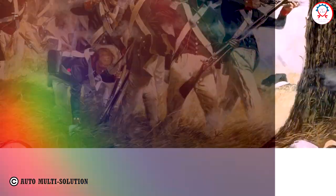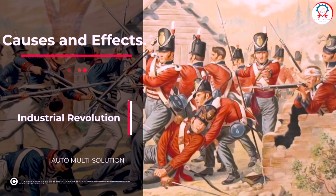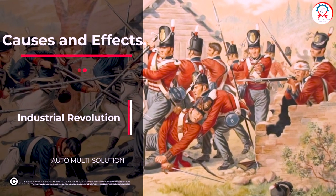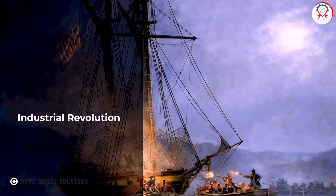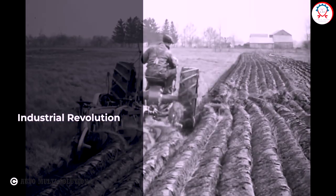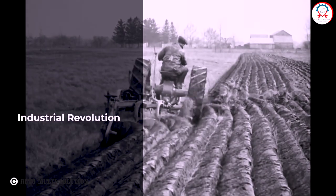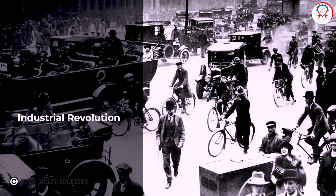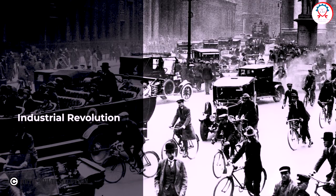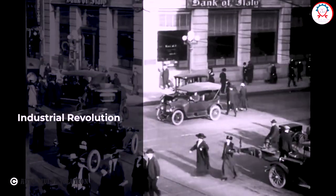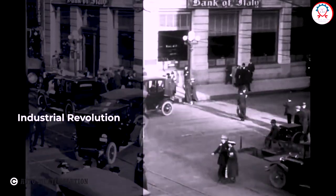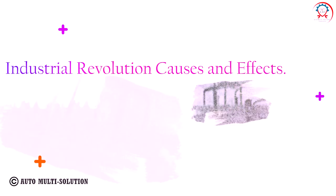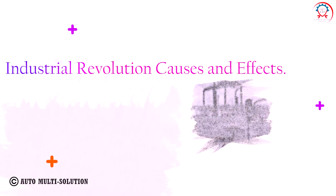What was the industrial revolution and its effects? Sweeping social changes occurred, including the growth of cities and the development of working-class movements. Urban areas grew rapidly as rural populations flocked to cities for work. For millions of laborers, industrialization often meant substandard wages and working conditions.